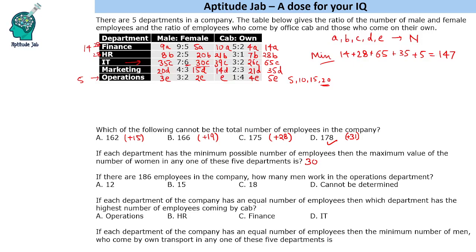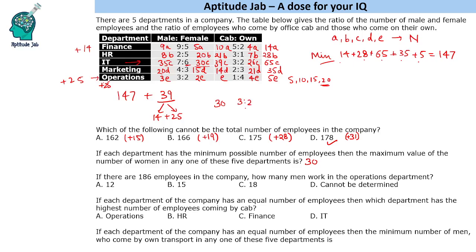If there are 186 employees in the company, how many men work in the operations department? 147 is the minimum. We need to increase by 39. We will have to see the combination of how we can increase 39 employees. We can increase in multiples of 14, 28, 65, 35, 5. So 39 we can increase is 14 plus 25 — that is the only possible way. So if we increase 25 employees in operations and 14 in finance to make it 39, that is total 186. If we increase 25 in operations, operations will have 30 employees. It is 3 ratio 2 in male to female ratio, so we will have 18 male employees.